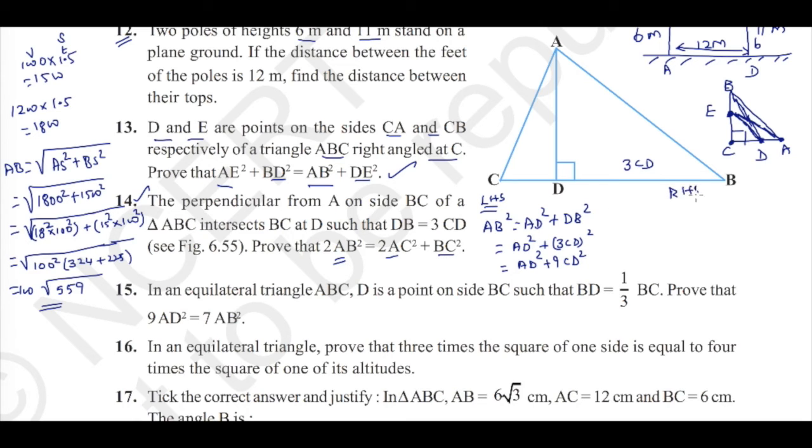Let us go for RHS. RHS 2 times of AC square plus BC square. We will first find AC square. AC square equal to AD square plus CD square. And BC square is equal to BD plus CD the whole square. Since BD is 3CD, the whole square, which is equal to 16CD square. Now RHS is 2 times of AC square plus BC square. Multiplying this by 2 here and BC square remains the same. We will get 2 times of AC square plus BC square is equal to 2AD square plus 2 times of CD square and 16CD square. This is 18CD square.